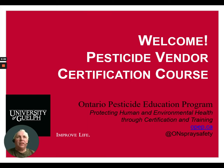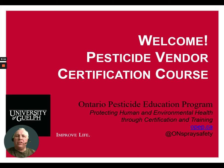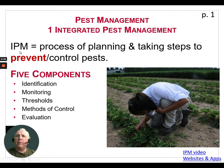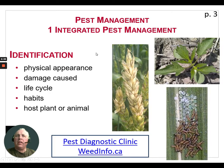Hi and welcome to the Ontario pesticide vendor certification course. My name is Steve Speller. Today's presentation will be talking about integrated pest management, or IPM. IPM is a process of planning and taking steps to prevent and control pests. There are five main components: identification, monitoring, thresholds, methods of control, and evaluations.